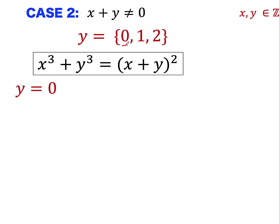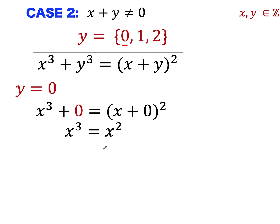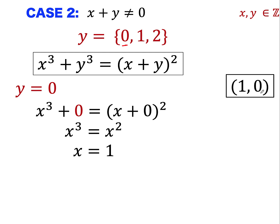First, if y equals 0: substituting gives x cubed equals x squared. Dividing both sides by x squared, we find x equals 1, so the ordered pair (1, 0) is a solution. Note that x equals 0 would make x plus y equal to zero, which is not allowed in case 2. So when y equals 0, the ordered pair (1, 0) is the solution.